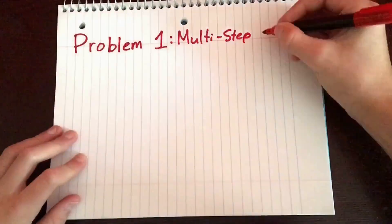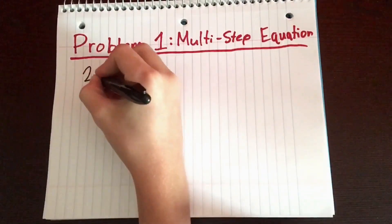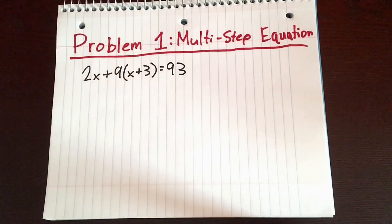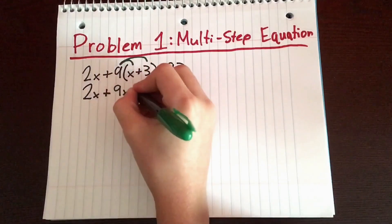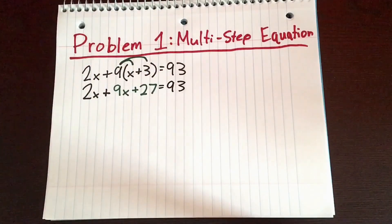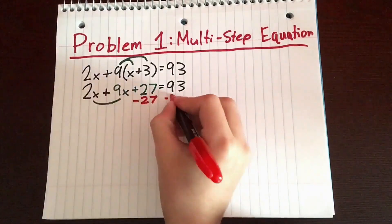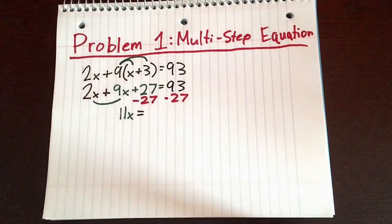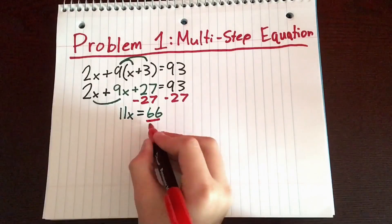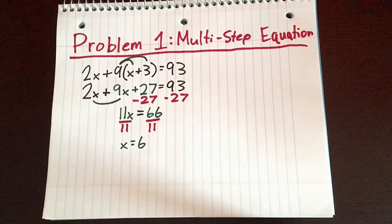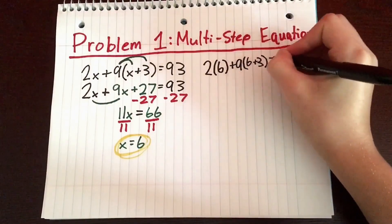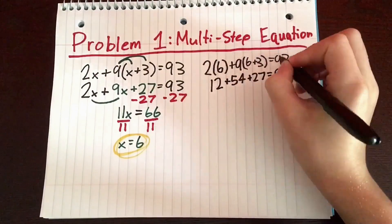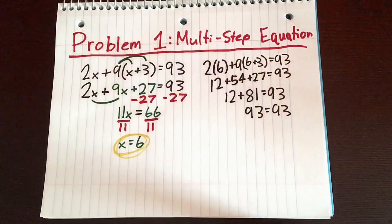The first problem is multi-step equations. We have the equation 2x plus 9(x plus 3) equals 93. The first thing we do is distribute, so that gives us 9x plus 2x plus 27 equals 93. We subtract 27 from both sides, which gives us 11x equals 66. We divide by 11 so that x equals 6. We can check by plugging in x, and that gets us 93 equals 93, so our answer is correct.